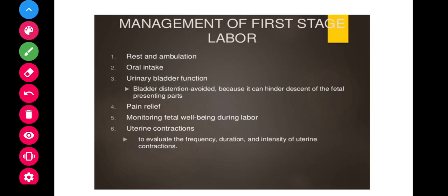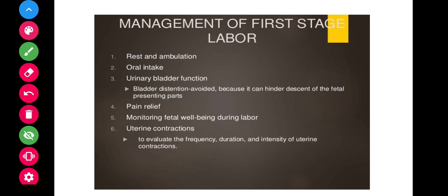Management of the first stage of labor includes rest and ambulation, since the patient is suffering from labor pains. Monitor oral intake and urinary bladder function — a distended bladder should be avoided as it can hinder descent of the fetal presenting part. Provide pain relief methods as ordered by the physician, monitor fetal well-being, and evaluate uterine contractions for frequency, duration, and intensity. Prepare for the second stage.